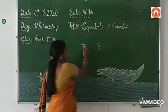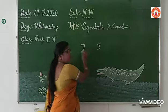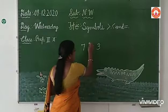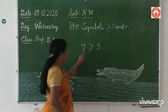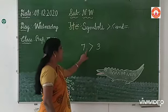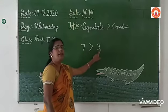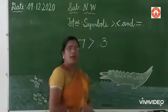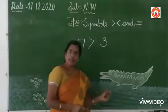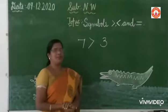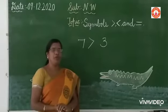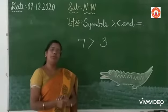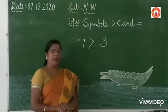Seven is a greater number, so we will add a symbol. That means seven is greater than three. I will tell you a crocodile story — it will be easy for you to put the symbol.